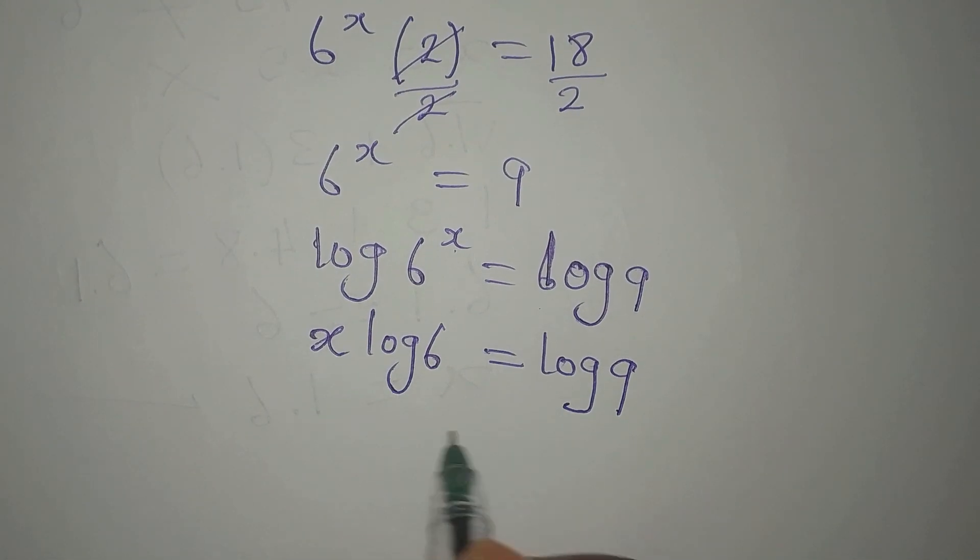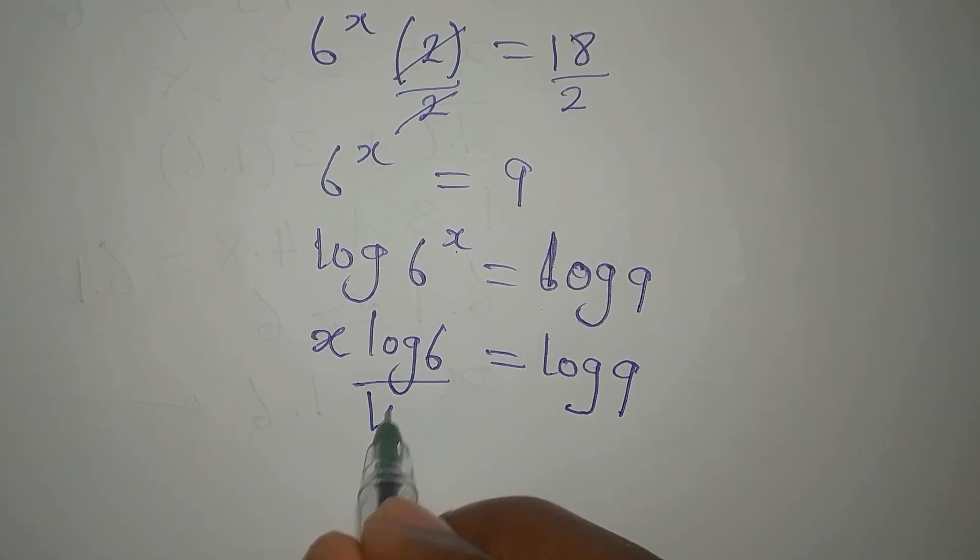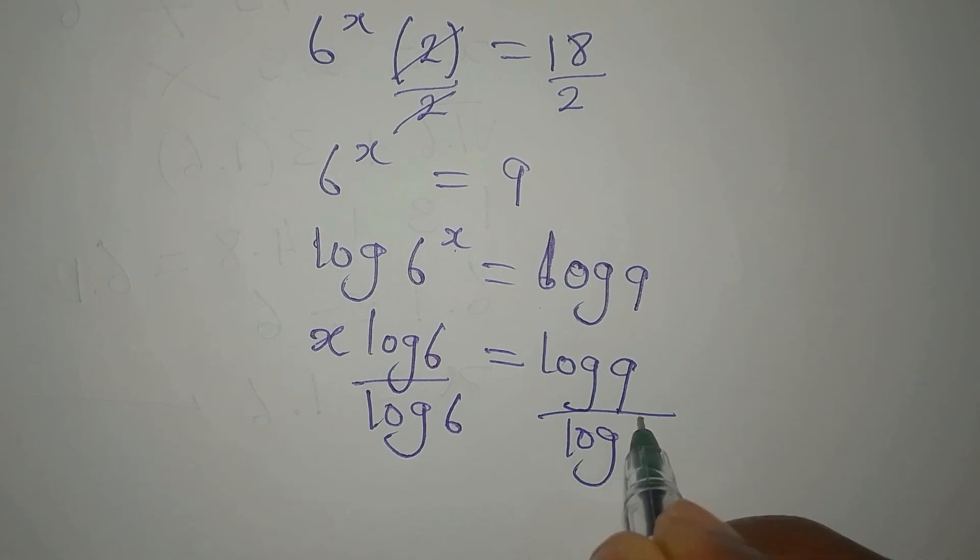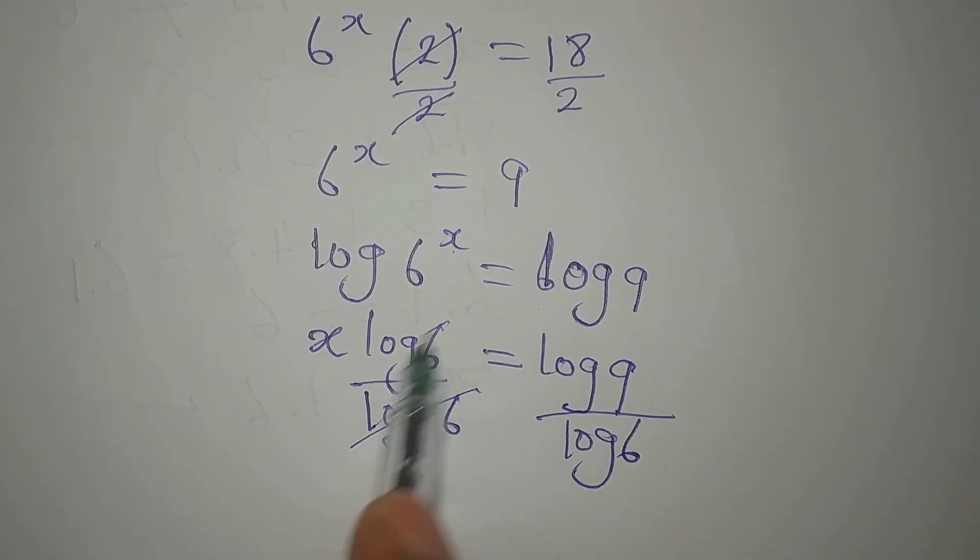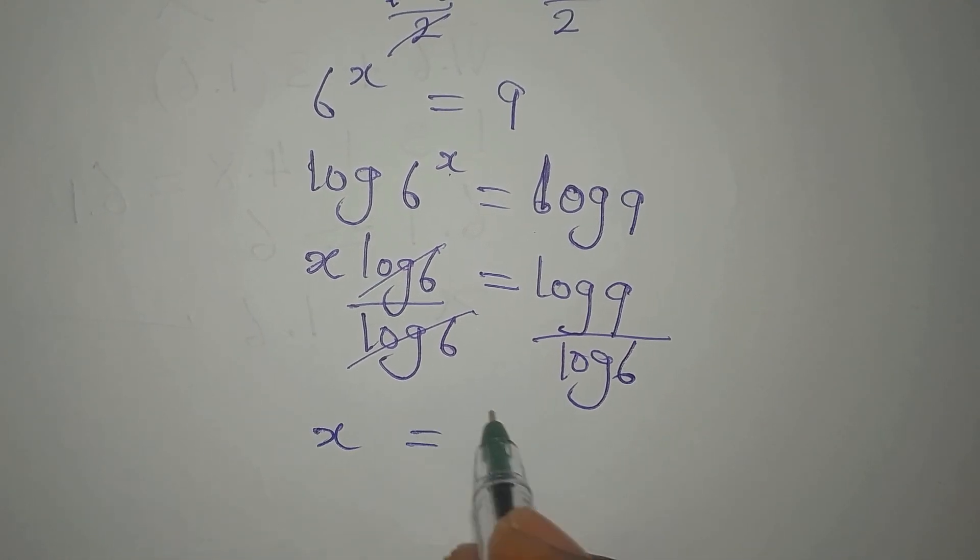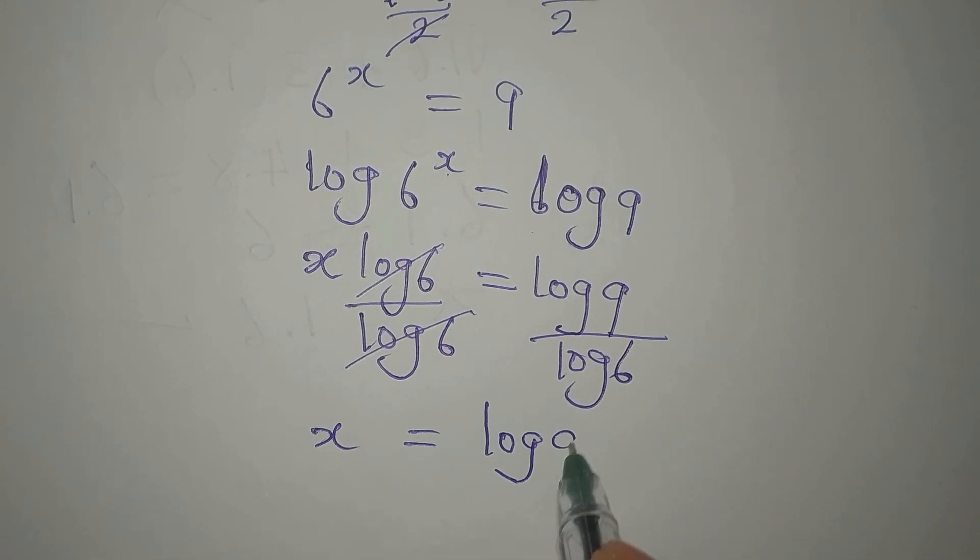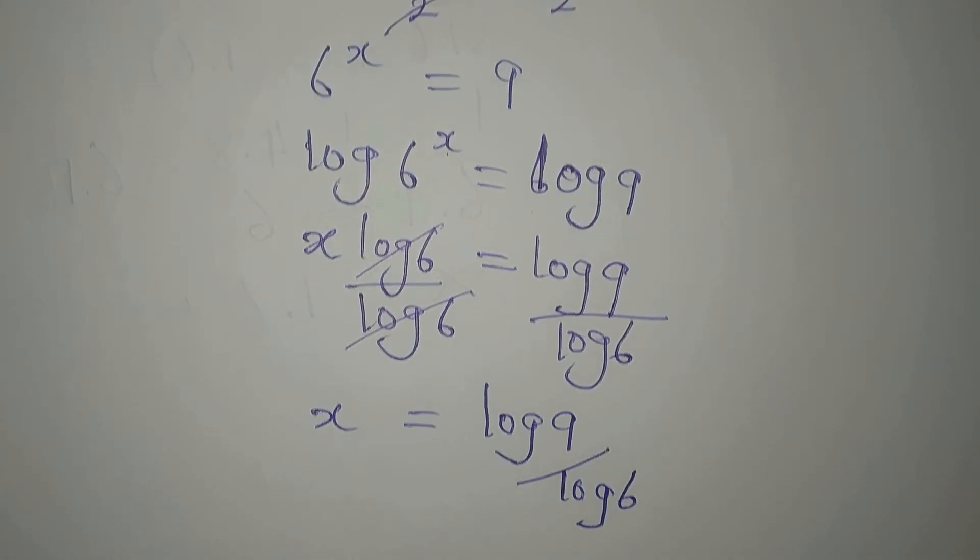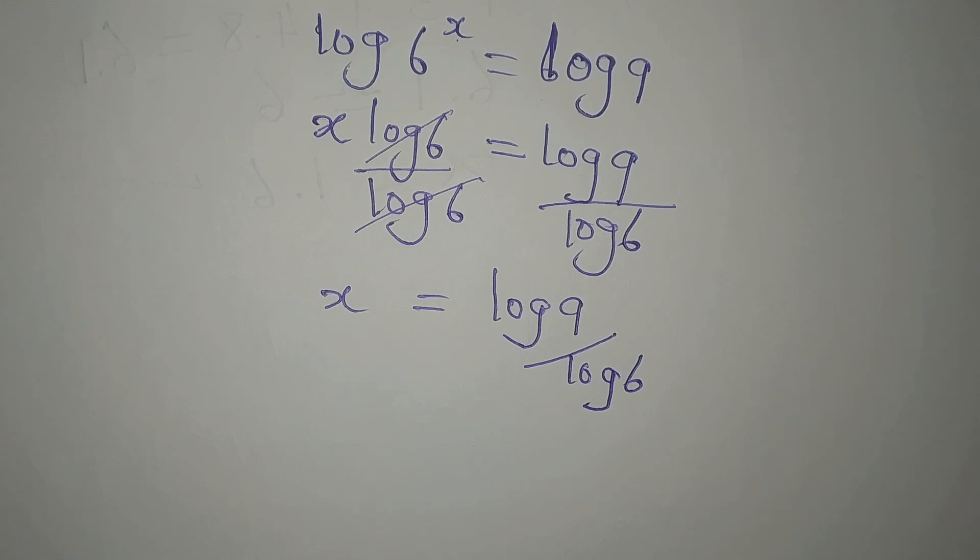To get the value of x, we'll divide this by log 6, divide this by log of 6. 6 can go with 6.